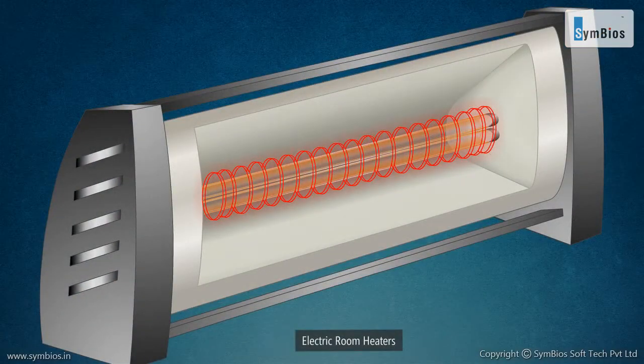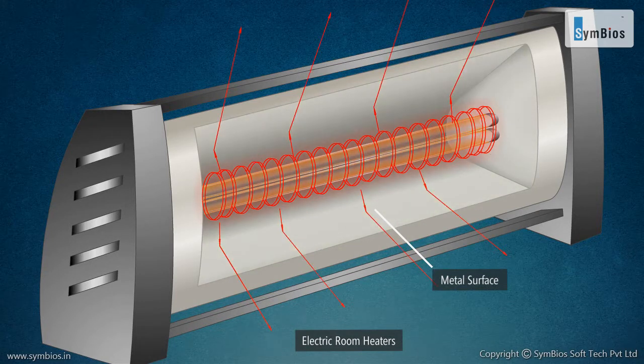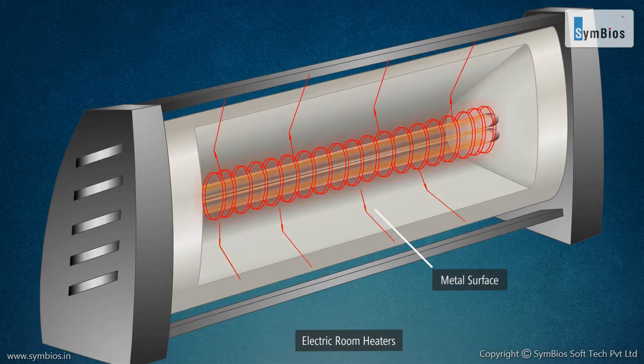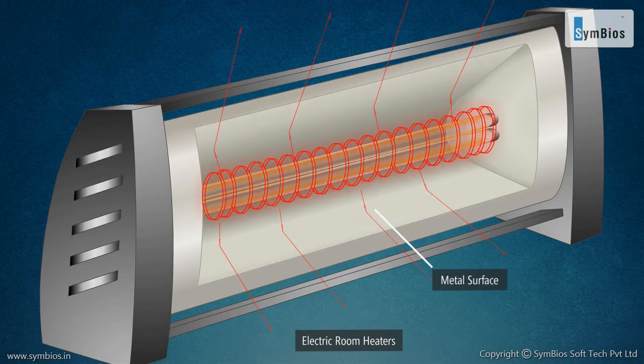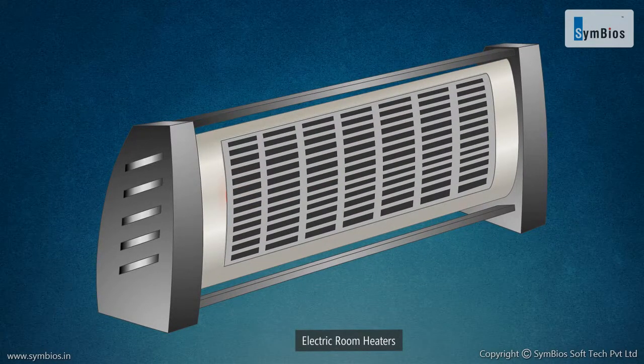Electric room heaters are provided with a polished metal surface behind the heating element. This surface reflects almost all the radiant heat from the heating element that falls on it, making the room heater more effective.